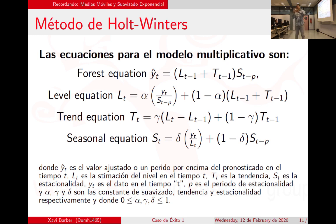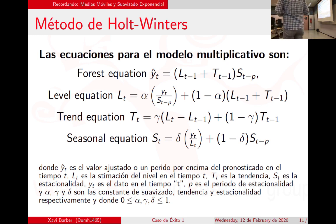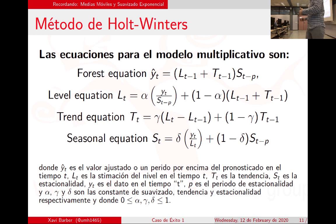Lo que añades en Holt-Winters es un parámetro más: divides tu variabilidad en tres. Aparte de preguntarte quiénes son tus amigos y si vas a tener más o menos, también dices que tienes amigos en tu residencia de verano. Acordaros del ejemplo de los amigos: todos los veranos voy a un sitio y tengo amigos de allí además de los de siempre. Puedo utilizarlo siempre; puede que el beta y el gamma salgan cero si no hay tendencia ni estacionalidad.